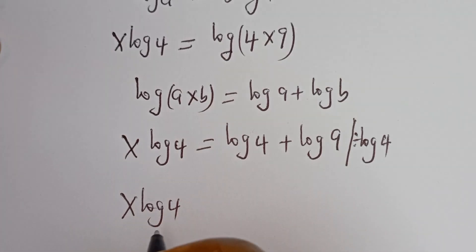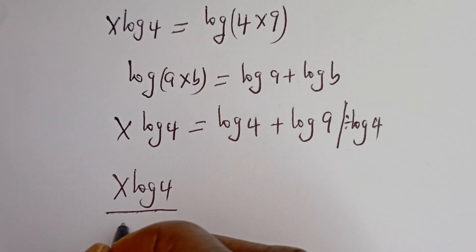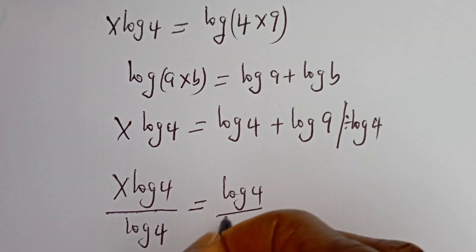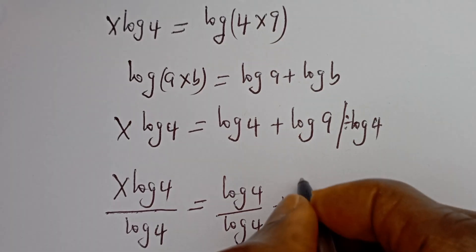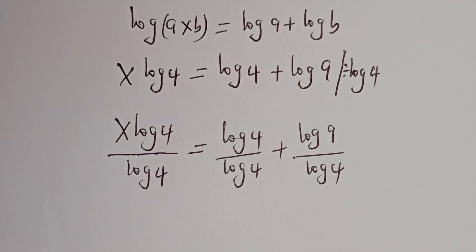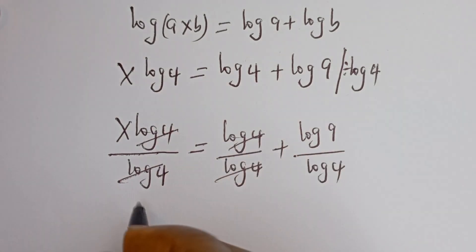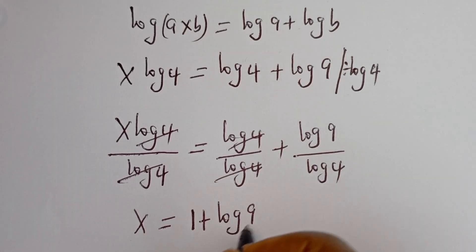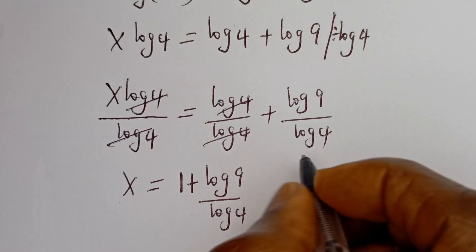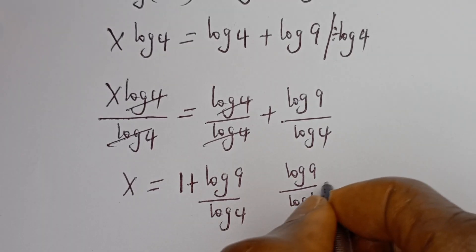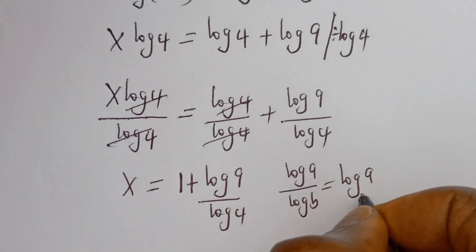We have x log 4 divided by log 4 is equal to log 4 divided by log 4 plus log 9 divided by log 4. This will cancel, giving x is equal to 1 plus log 9 divided by log 4. And if you have log a divided by log b, this is equal to log a base b.